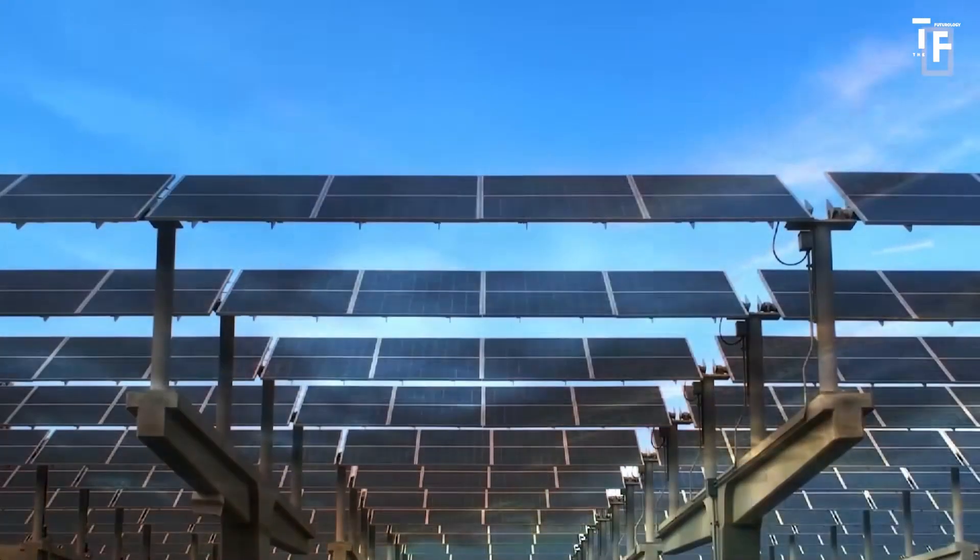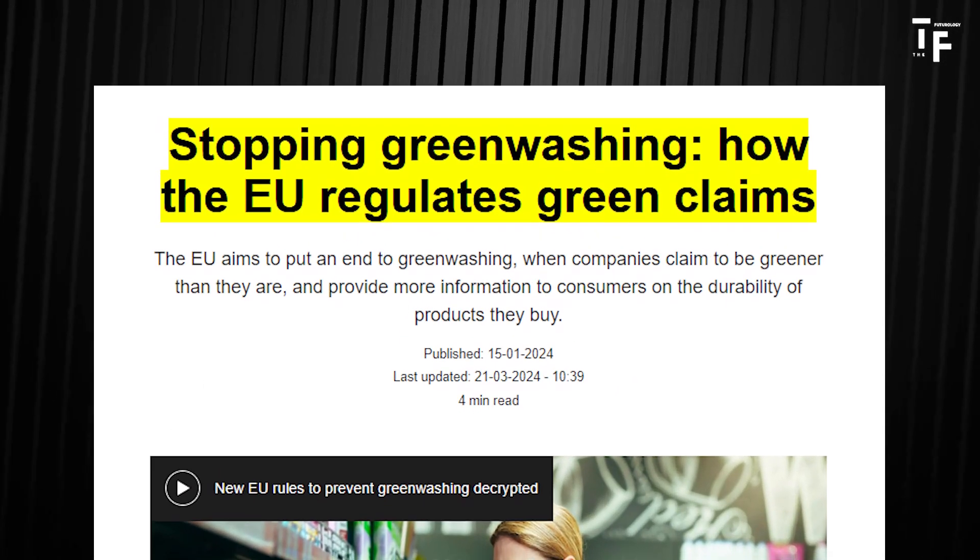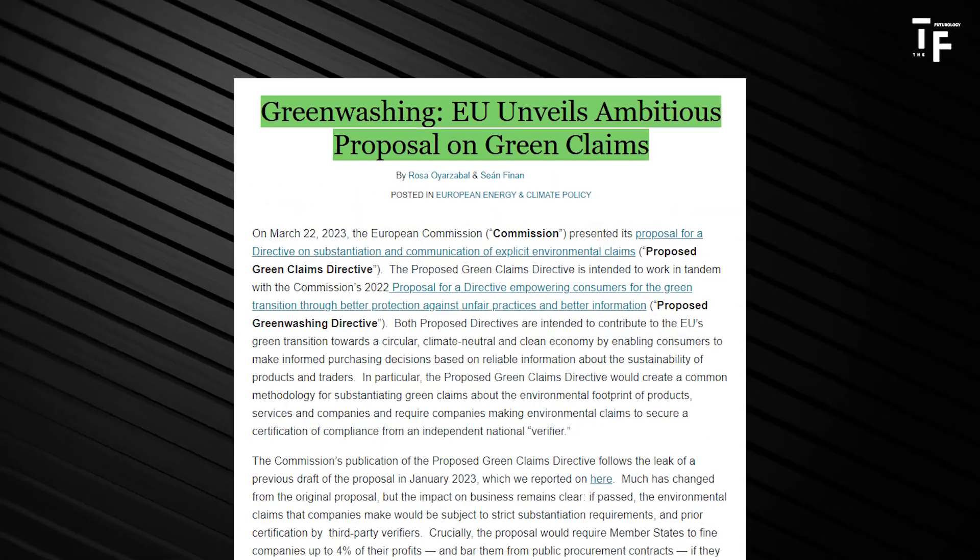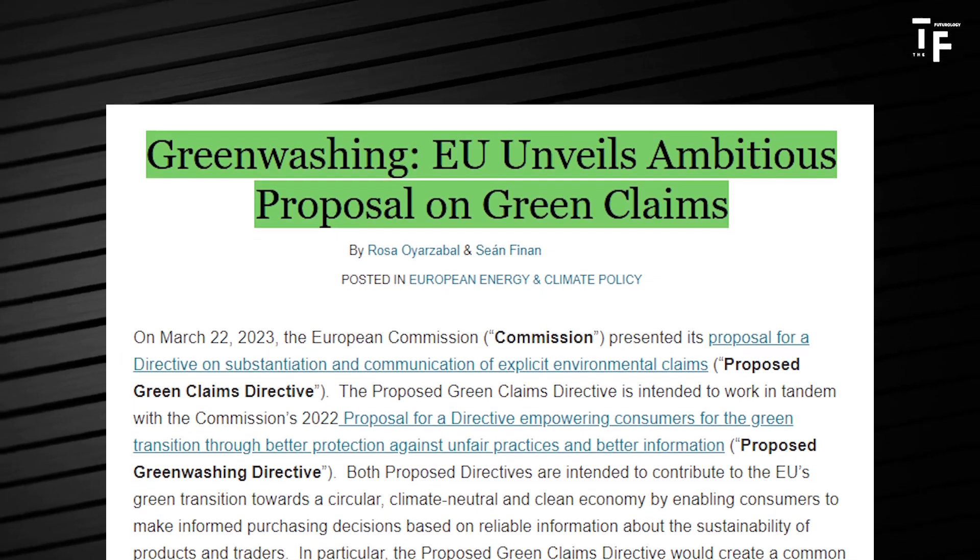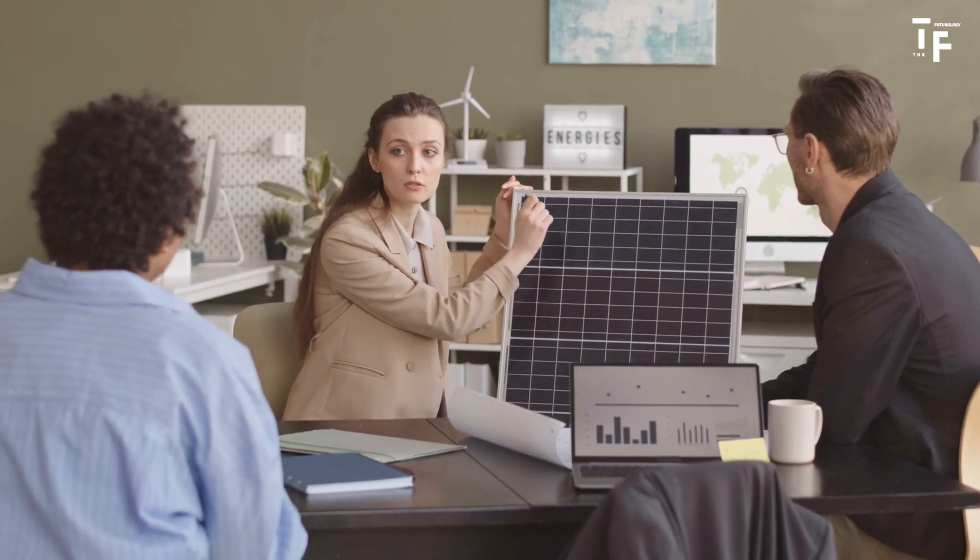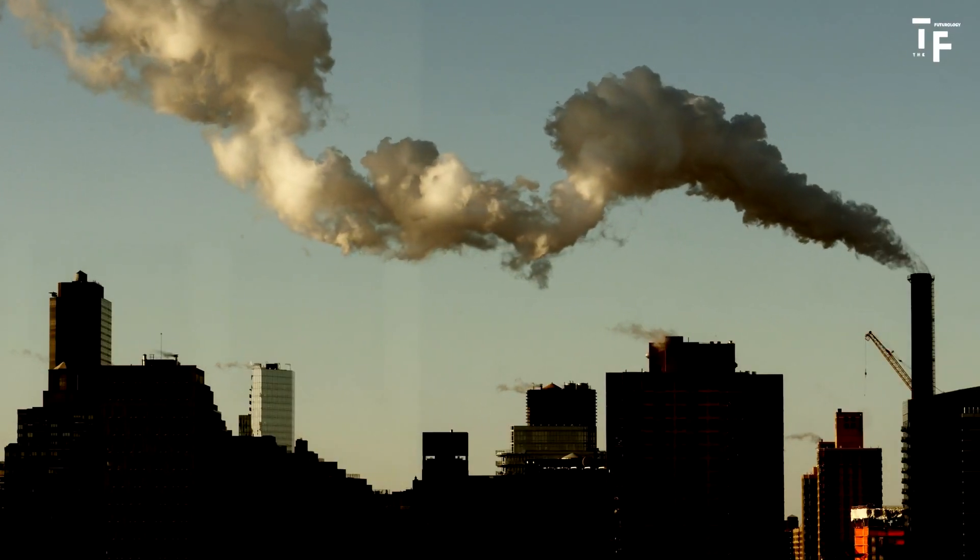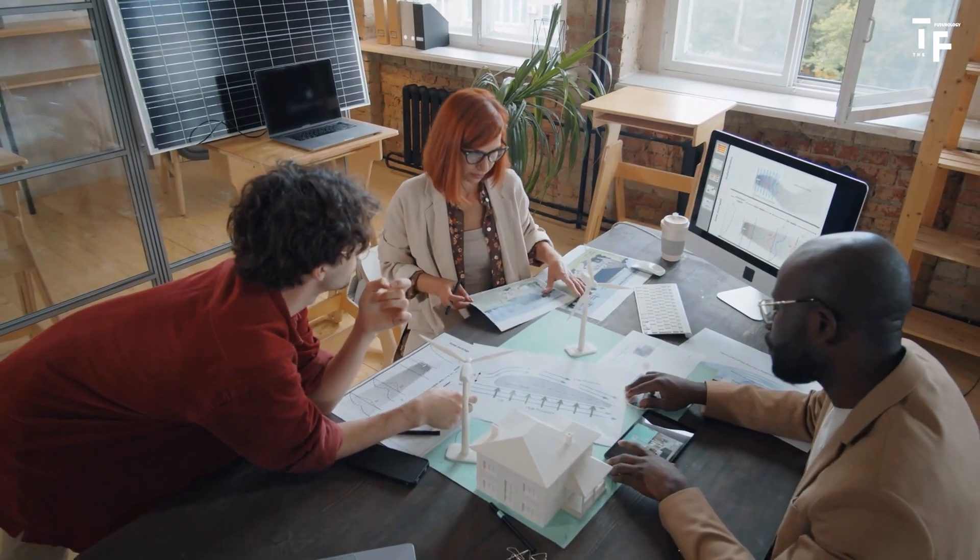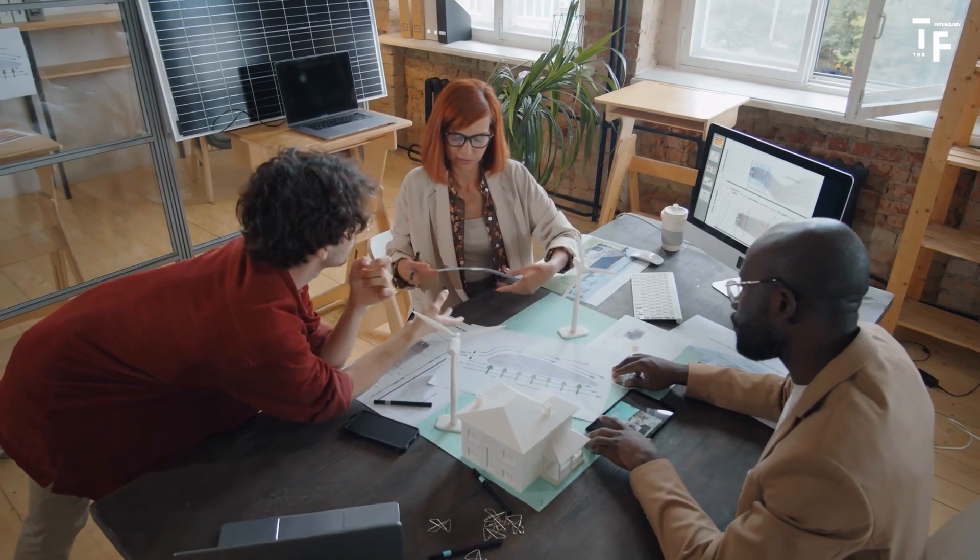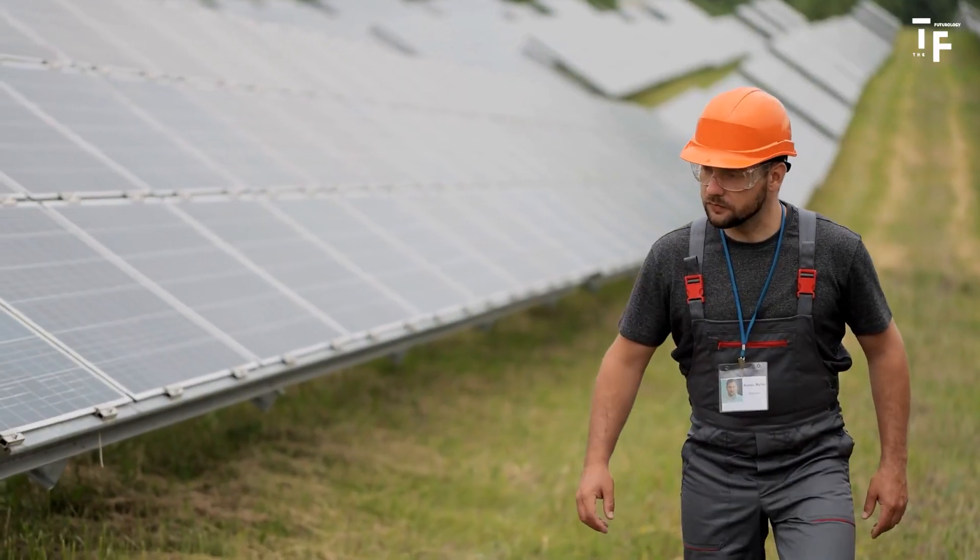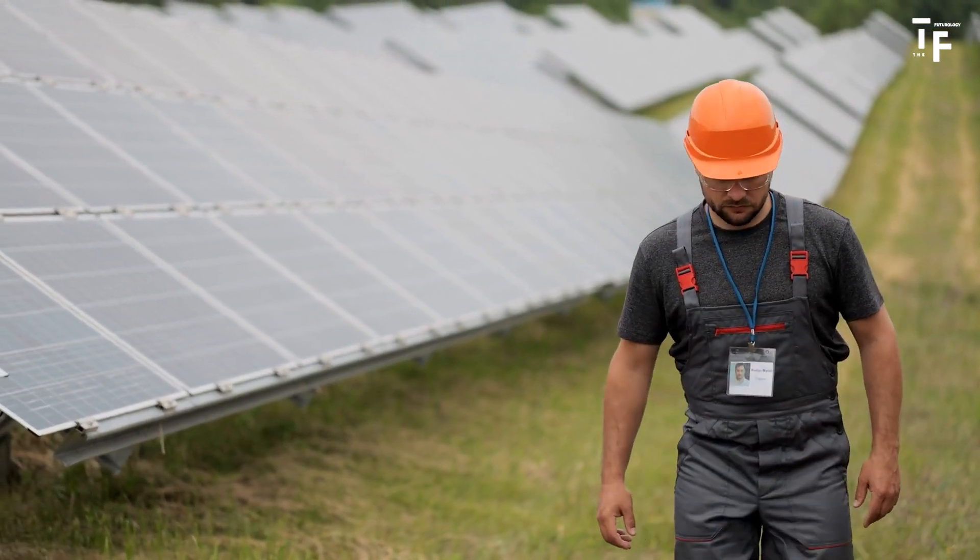For instance, new regulations in the EU and forthcoming laws in California are set to curb greenwashing by requiring more rigorous reporting of environmental claims. These policies are crucial in ensuring that the shift to renewable energy is rapid, credible and effective in reducing global carbon emissions. Solid governmental action and international cooperation lays the groundwork for a significant acceleration in the global transition to renewable energy.